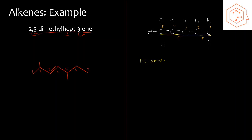There are two ways to name this structure. The first way: include the parent chain prefix 'pent', then the position of each double bond — 1,3 — then end with '-diene' (using the plural prefix 'di' because there are two double bonds). The second way: include the position numbers before the parent chain prefix — so it becomes 1,3-pentadiene. The only difference is the position of the numbers.